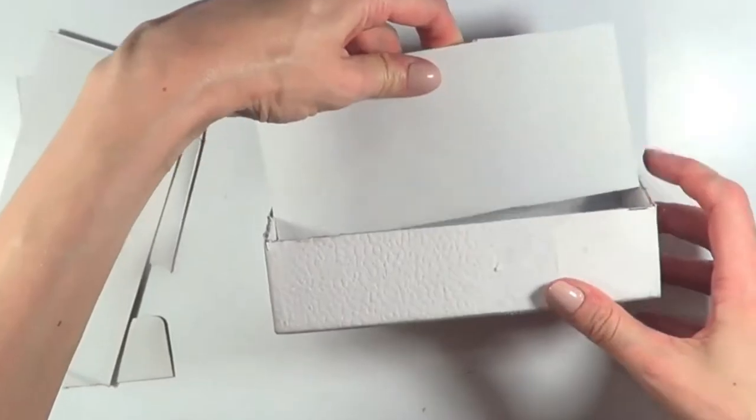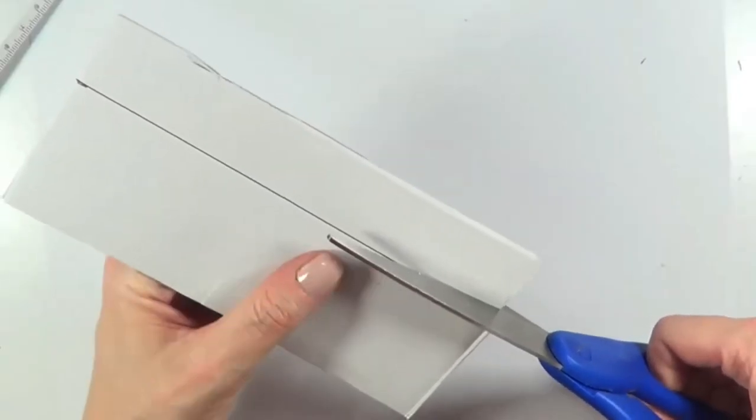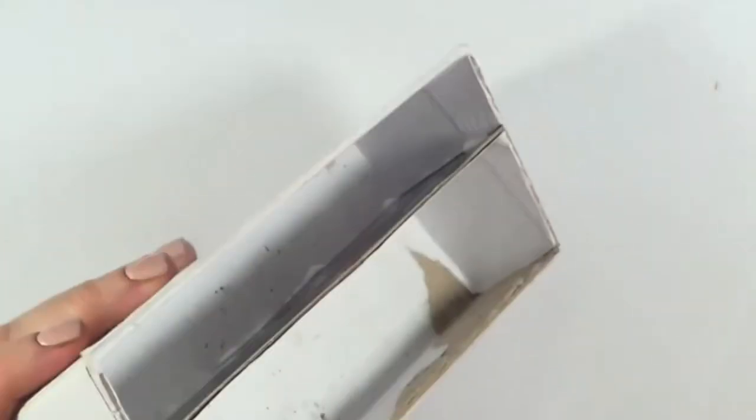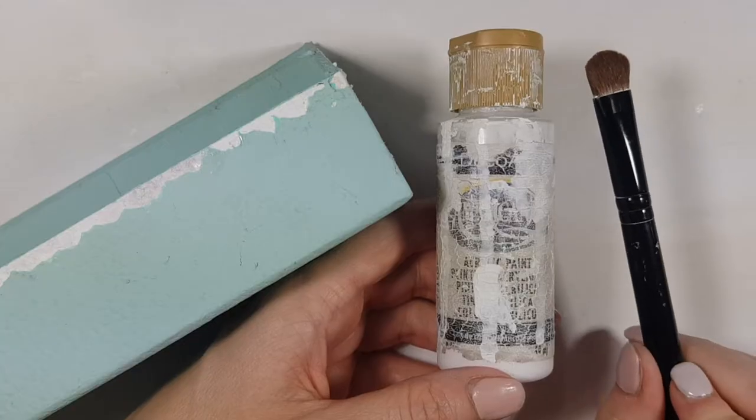Essentially, I just used a Dior J'adore perfume box and cut parts of it, then added the divider.